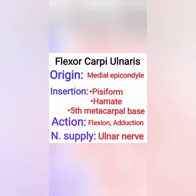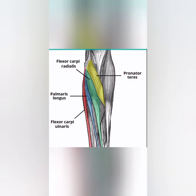Moving to flexor carpi ulnaris: it originates from the medial epicondyle and inserts into the pisiform, hamate, and fifth metacarpal base. Its action is flexion and adduction at the wrist joint, and it is supplied by the ulnar nerve. All superficial compartment muscles originate from a common tendon arising from the medial epicondyle of the humerus, as you can see in the illustration.